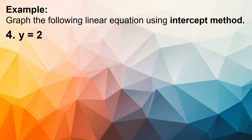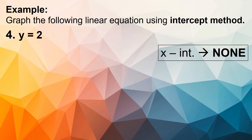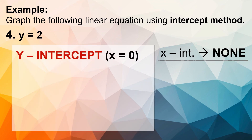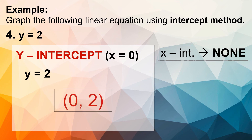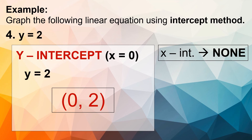Another example: y is equal to positive 2. Since it has no variable x, we have no x-intercept. For the y-intercept, since we do not have the variable x, we do not have to solve — our value of y is simply positive 2. So the coordinates will be 0 and 2, with 0 for x and 2 for y.